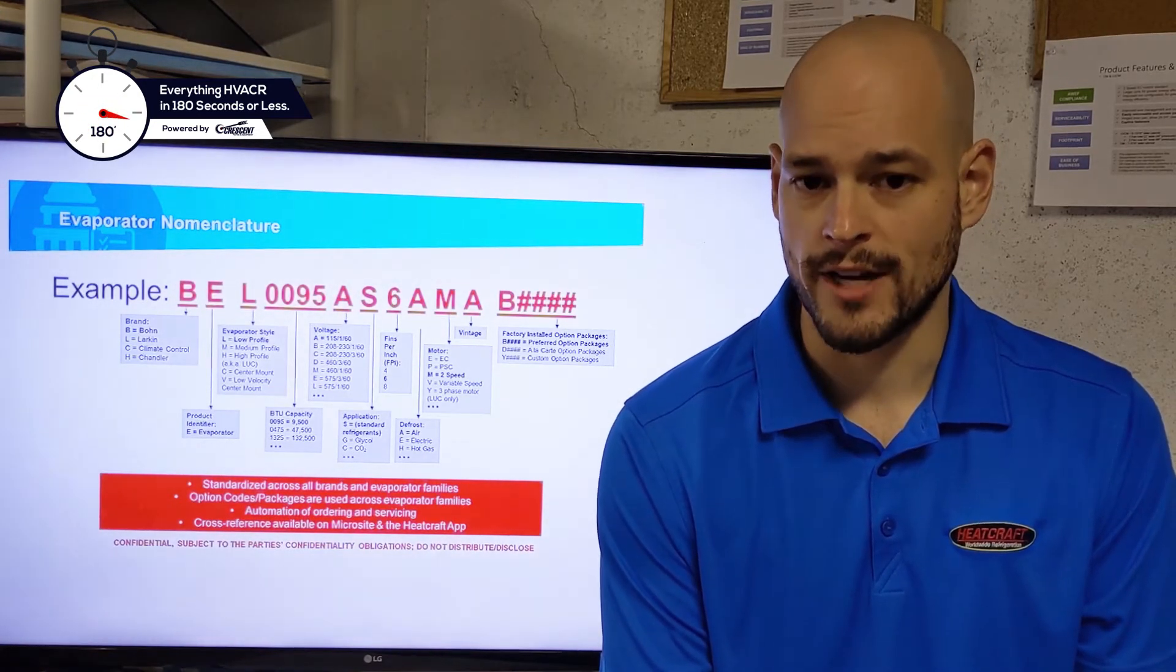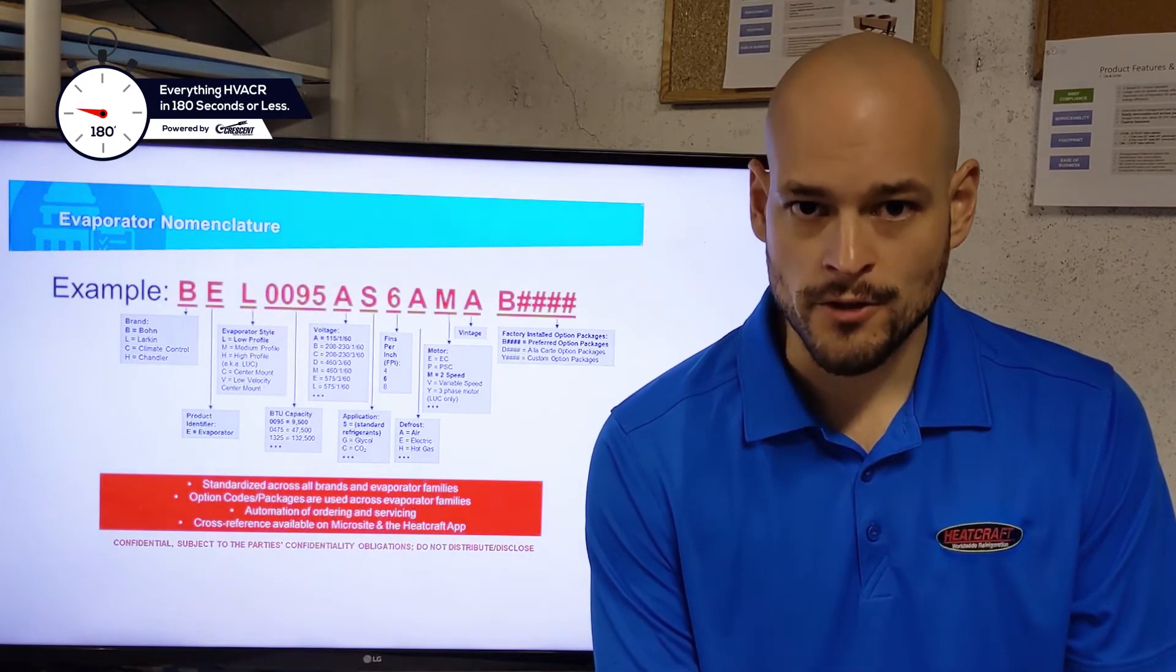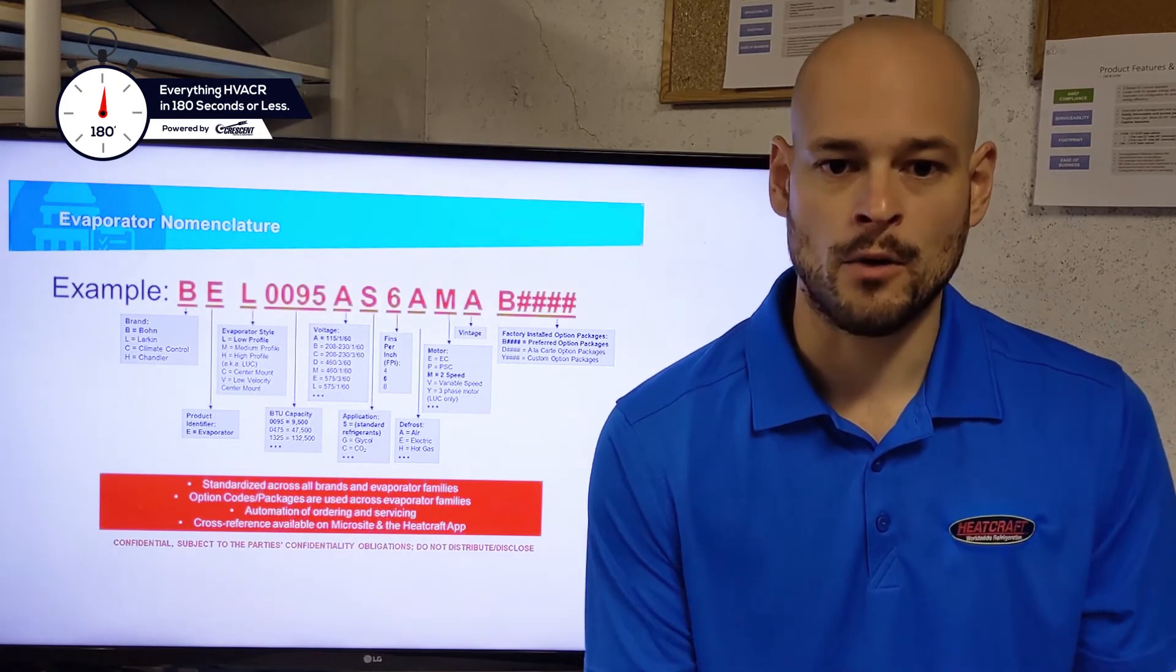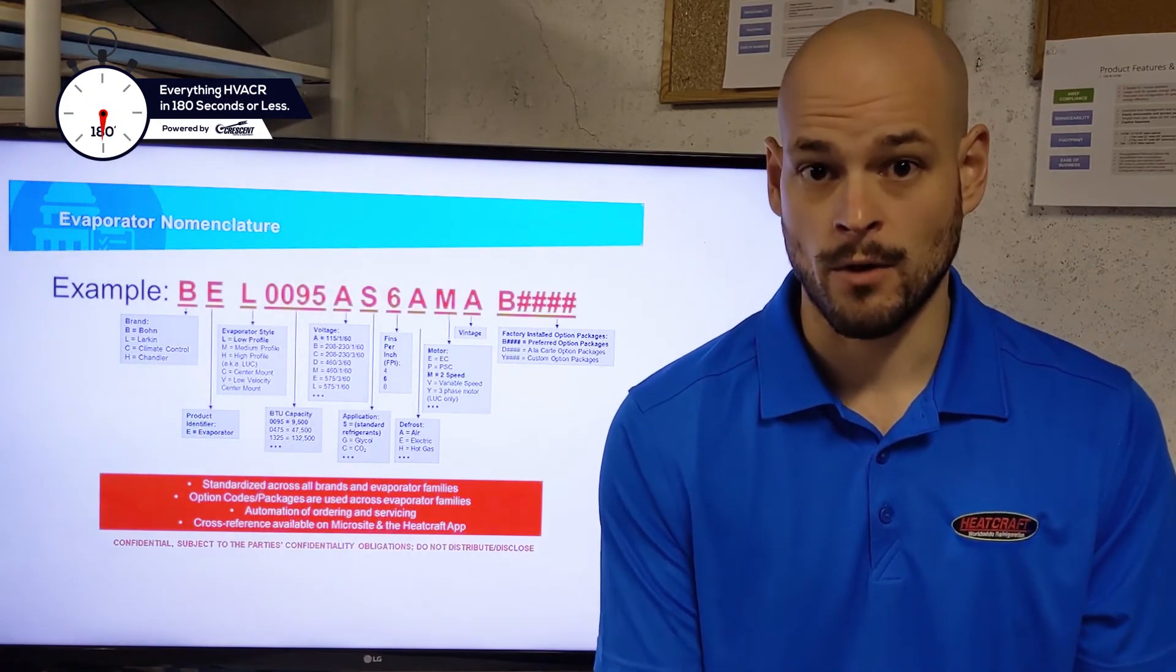Your next digit is going to just be the vintage code. This is the first version of this model, so we start with an A vintage. The next minor revision we make to this model is going to go to a B vintage, and then C, and so on and so forth.